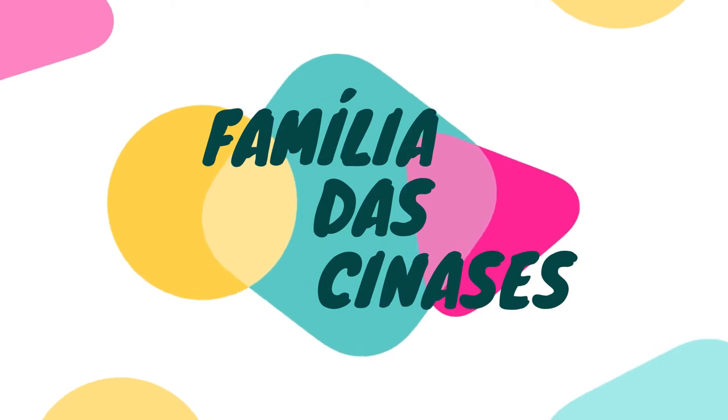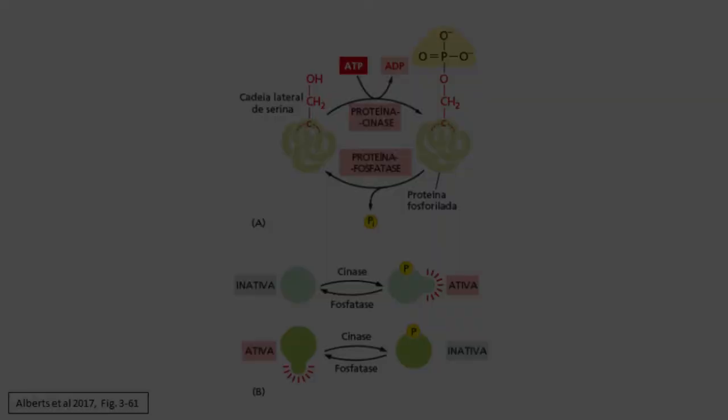Os principais personagens bioquímicos que atuam no controle do ciclo celular fazem parte de uma mesma família de proteínas: a família das sinases, ou quinases. Sinases são enzimas que transferem um grupo fosfato de um ATP para um aminoácido específico de alguma proteína, provocando assim a fosforilação de porções-chave de proteínas importantes. Dessa forma, através desse tipo de modificação química, as sinases promovem mudanças conformacionais nas proteínas-alvo.